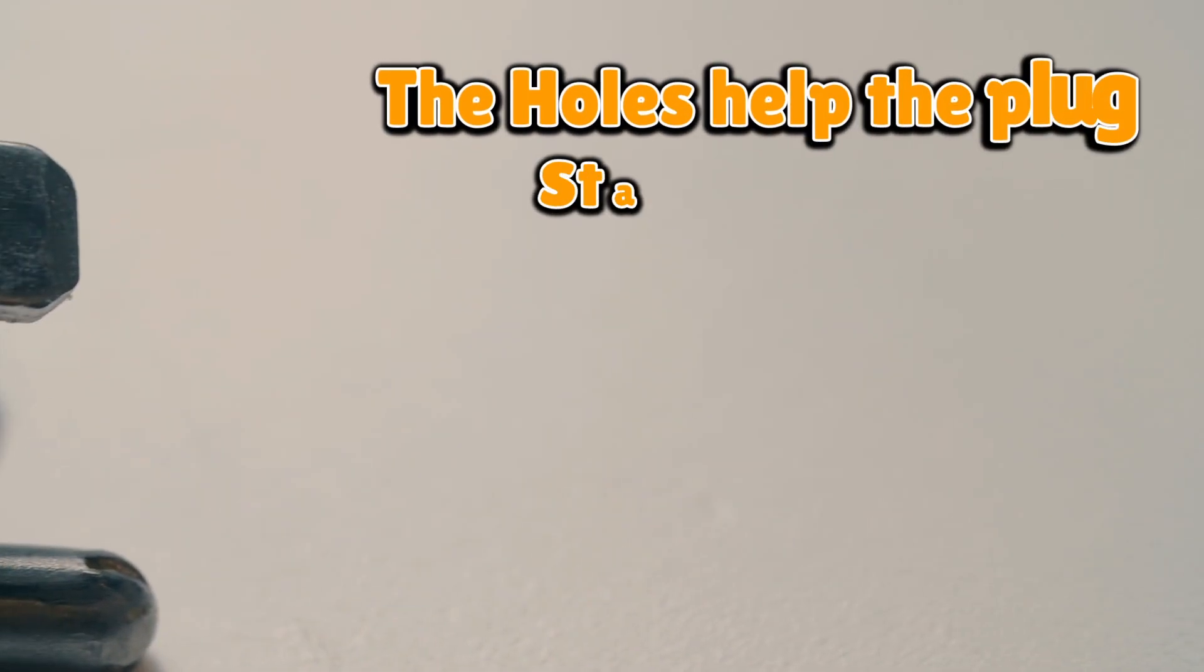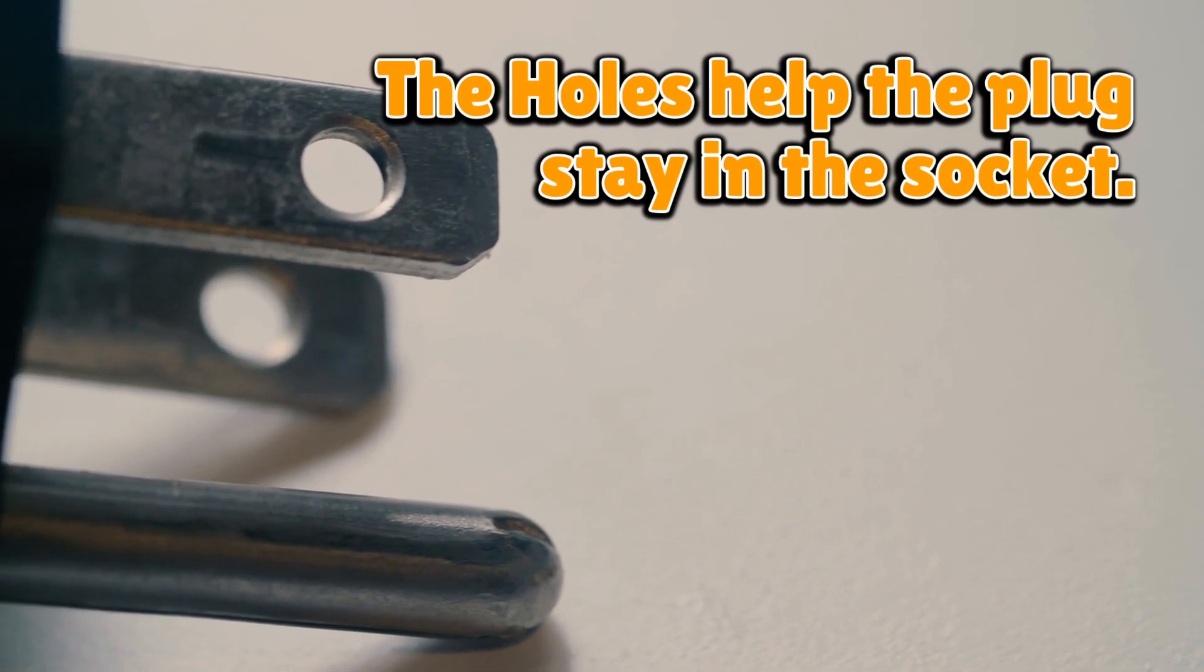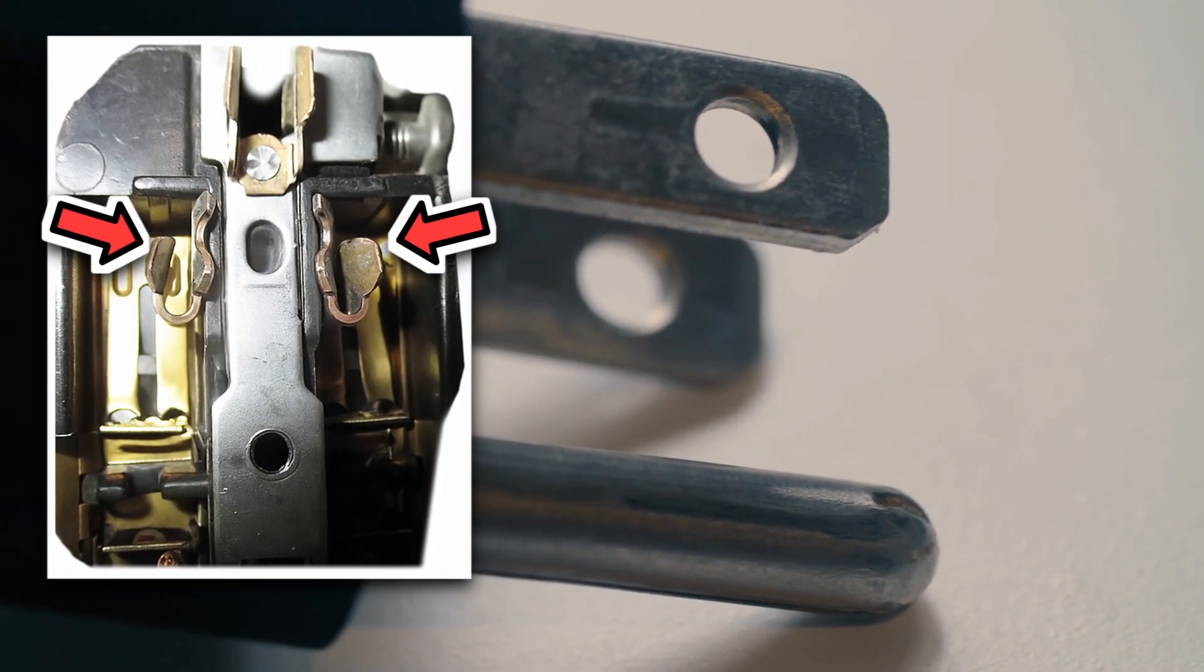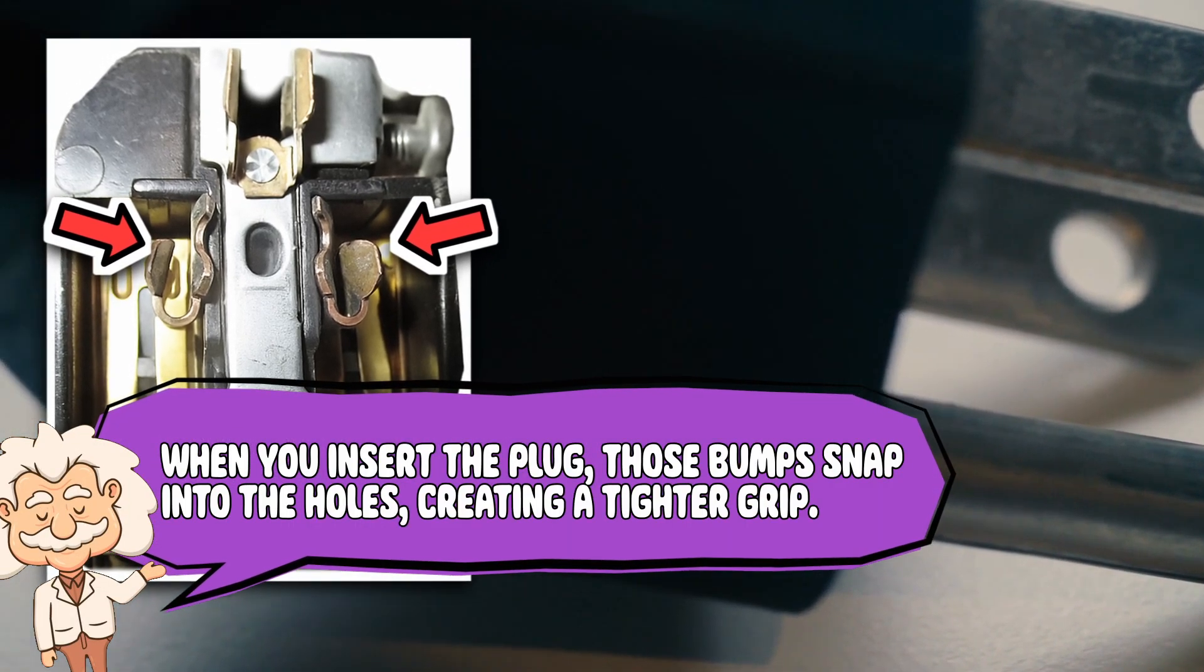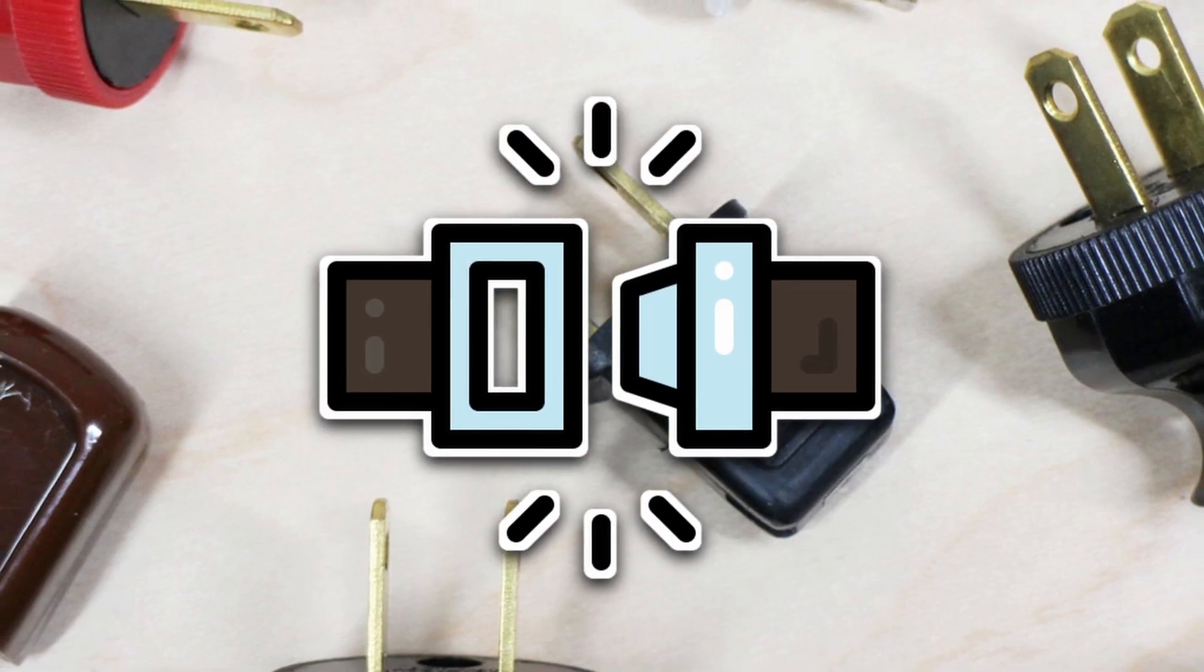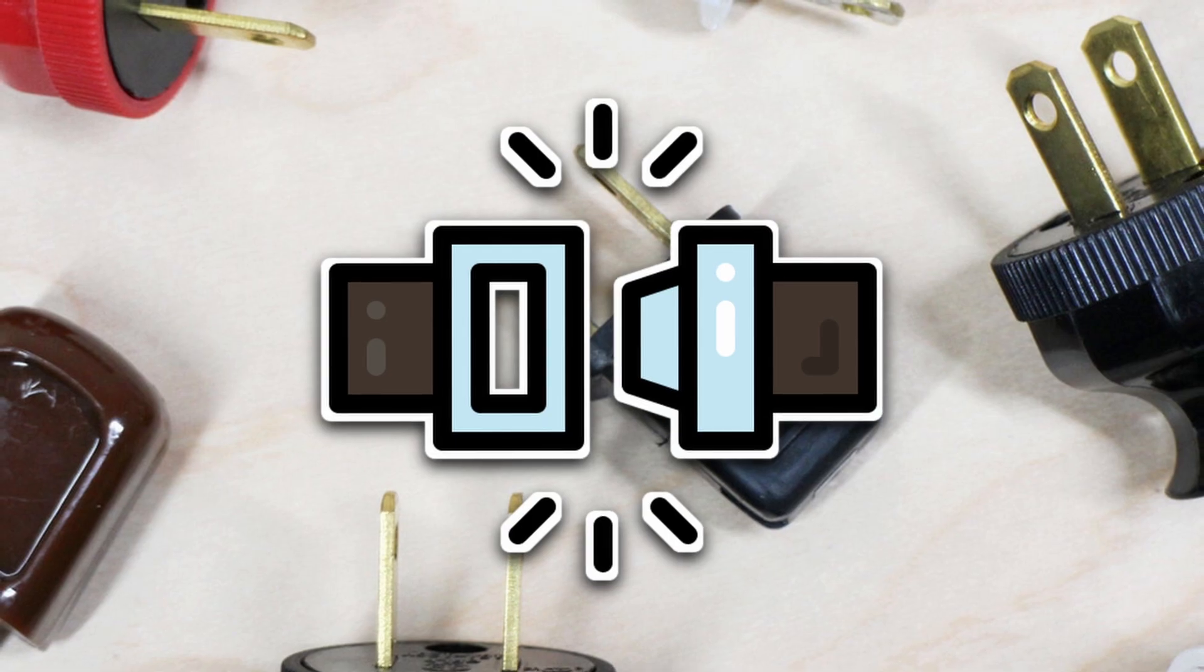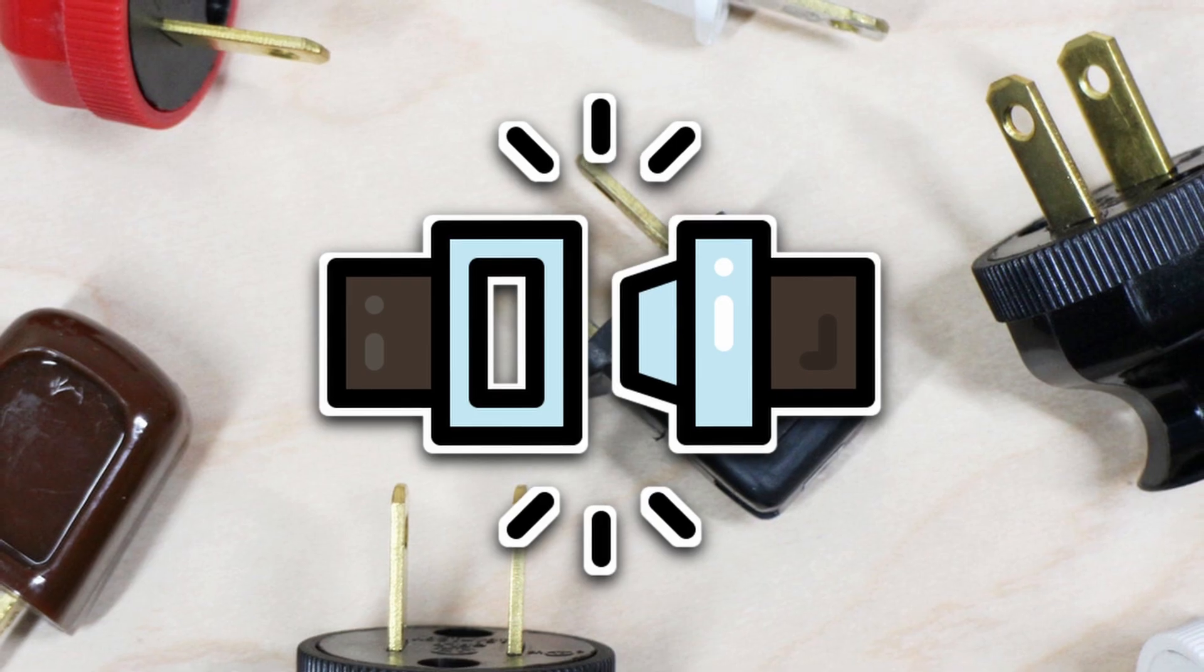Let's start with the most practical reason. The holes help the plug stay in the socket. It's not about making them look fancy or aerodynamic. Those holes line up with small spring-loaded bumps or detents inside the outlet's metal contacts. When you insert the plug, those bumps snap into the holes, creating a tighter grip. Basically, it's the plug's version of a seatbelt click. You know it's connected properly when it snaps into place.